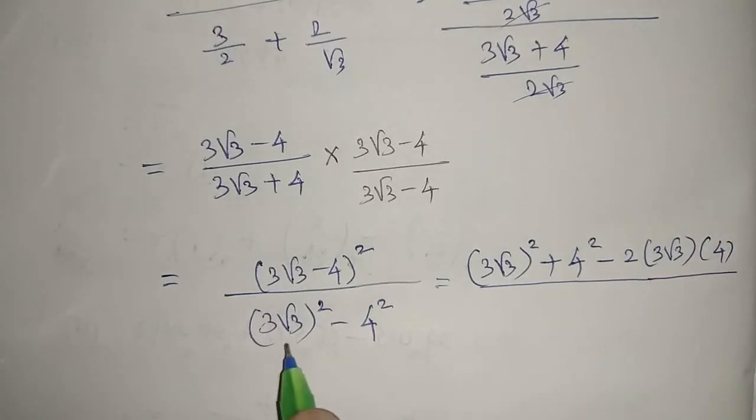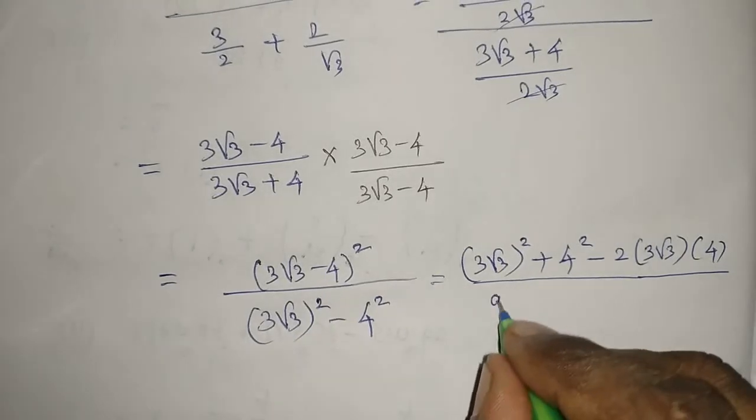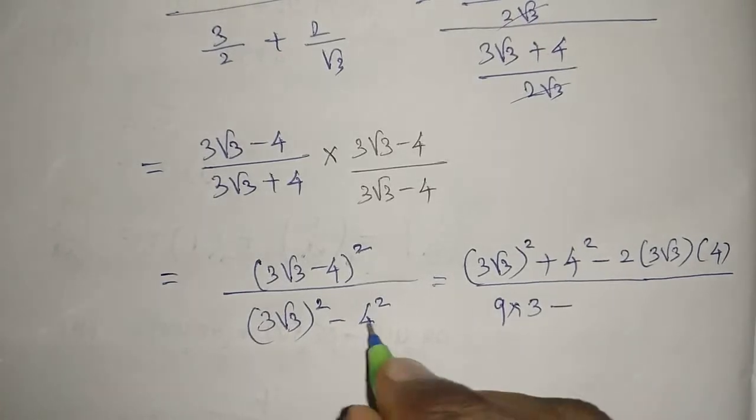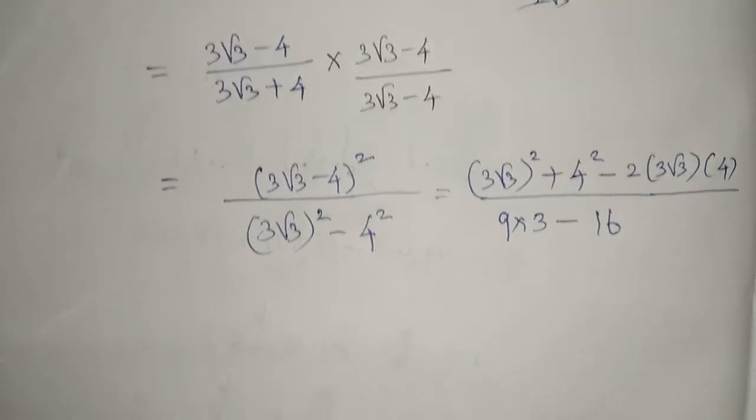Here the square is common for both 3 and √3. 3² is 9, (√3)² is 3, so 9 × 3 = 27, minus 4² which is 16.